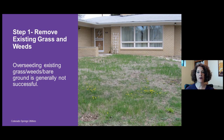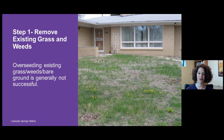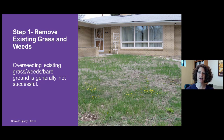Step one is removing existing grass and weeds — a very important step. It can be tempting to plant seed or plugs into an existing bare area, but that is generally not a successful approach. You need to remove any existing grass and weeds to give your buffalo grass or blue grama a quality planting site so it will grow successfully.